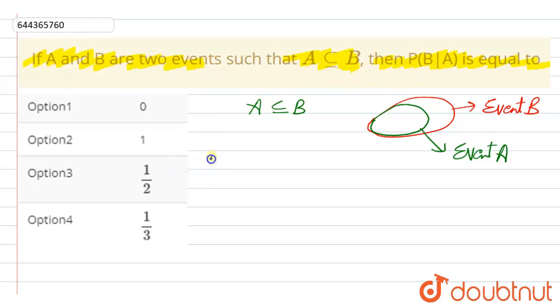So here, we have to find probability of happening of event B by A, which is equal to probability of A intersection B divided by probability of A.